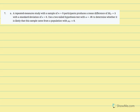Number 7: a repeated measure study with a sample of n equals 9 participants produces a mean difference equal to 3 with a standard deviation equal to 6. Use a two-tailed test with alpha equal to 0.05. Determine whether it is likely that this sample came from a population with mean difference equal to zero. 'Likely' implies the sample mean would be close to zero.